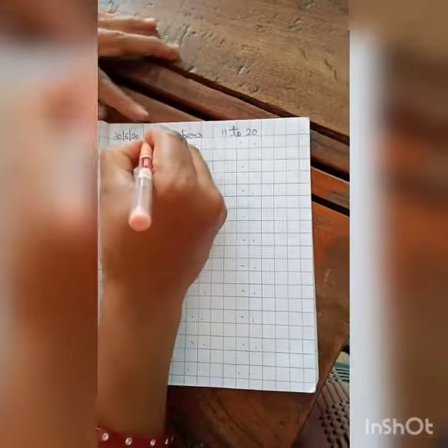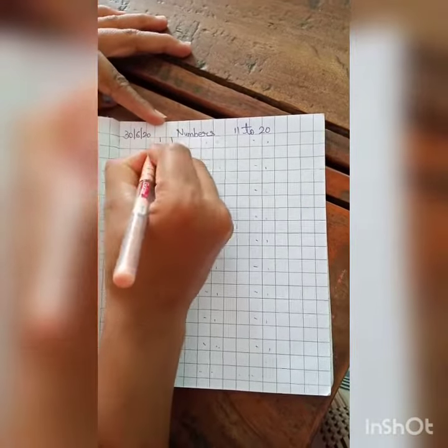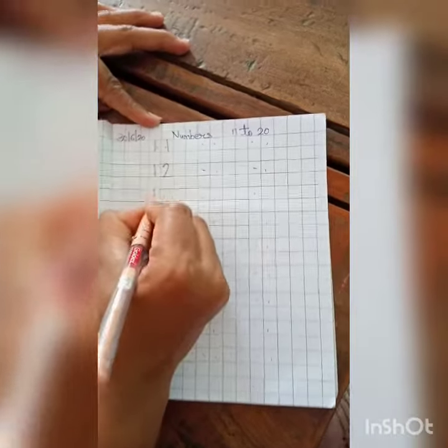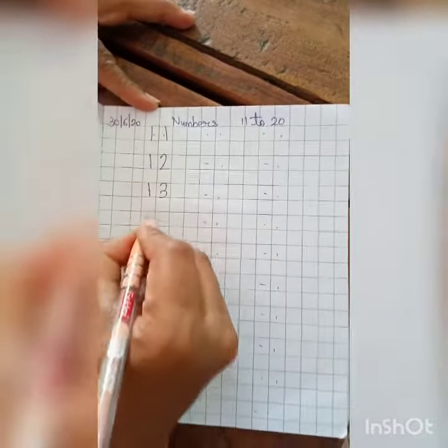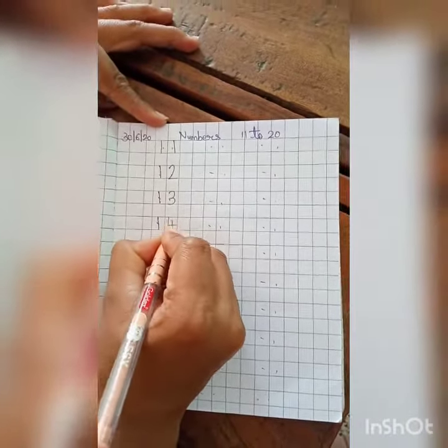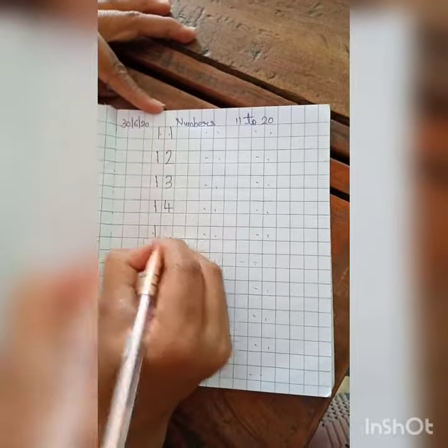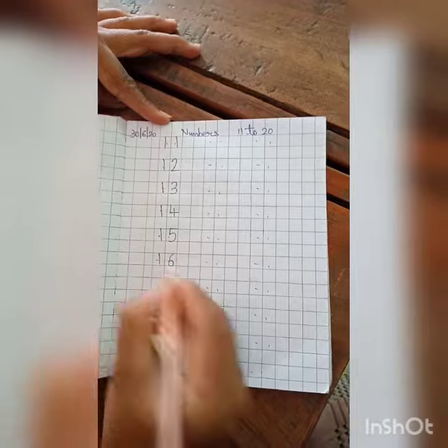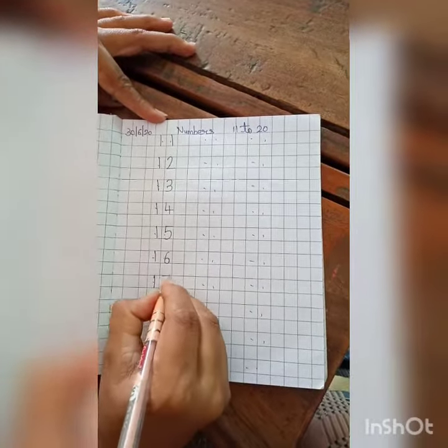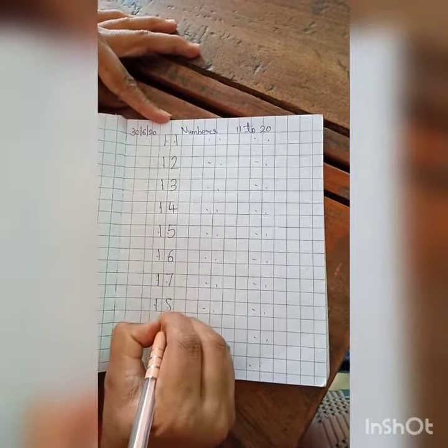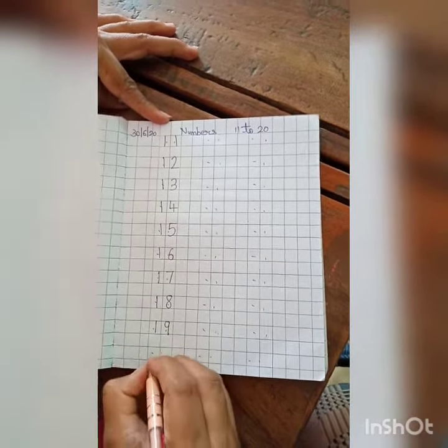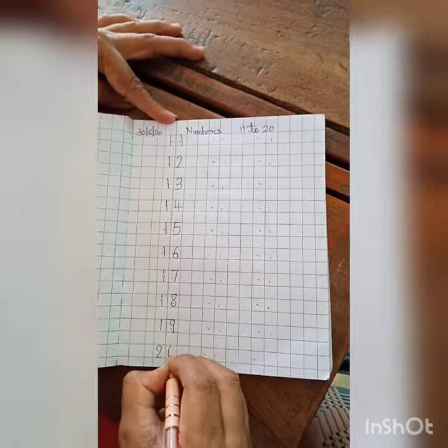1 1 11, 1 2 12, 1 3 13, 1 4 14, 1 5 15, 1 6 16, 1 7 17, 1 8 18, 1 9 19, 2 0 20.